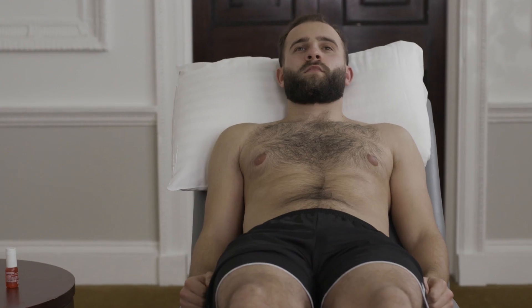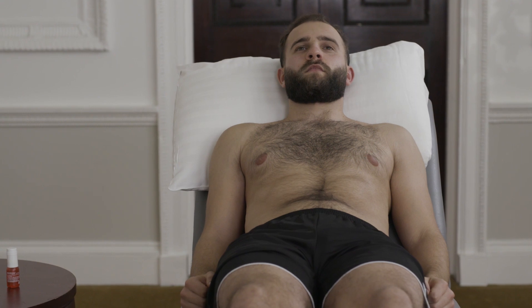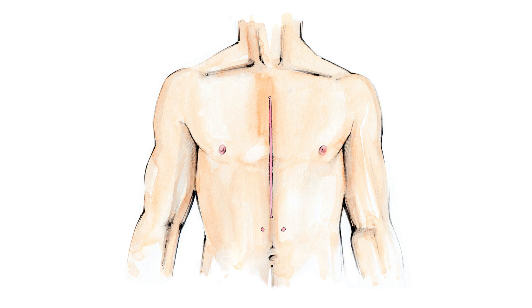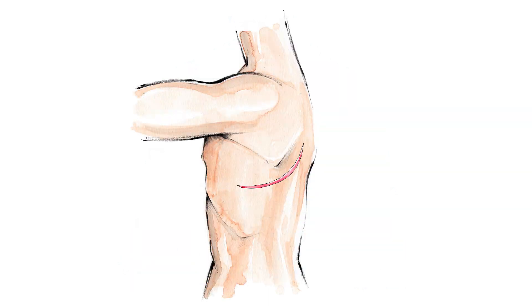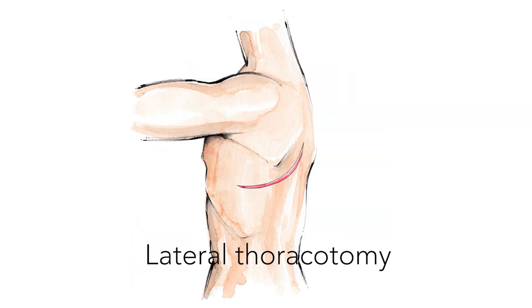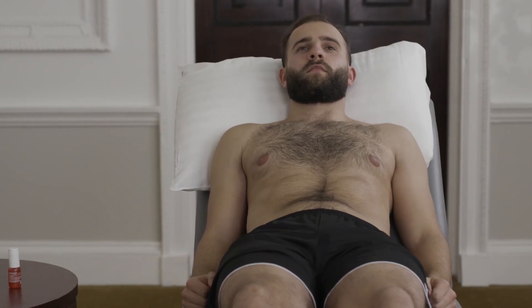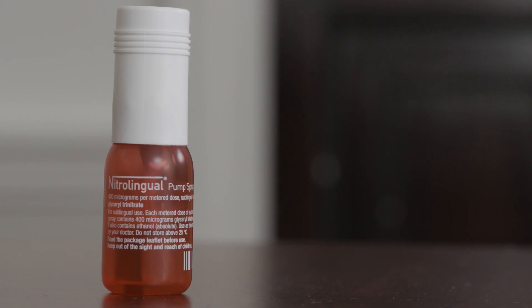Observe for dyspnea and scars. A midline sternotomy is performed for coronary artery bypass grafting and aortic valve replacement. A lateral thoracotomy is performed for mitral valve replacement. Listen out for an audible mechanical heart valve. Inspect the bedside for paraphernalia including walking aids, GTN spray and cigarettes.